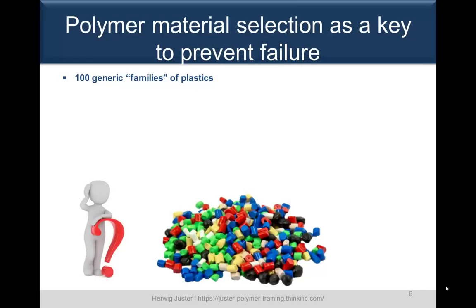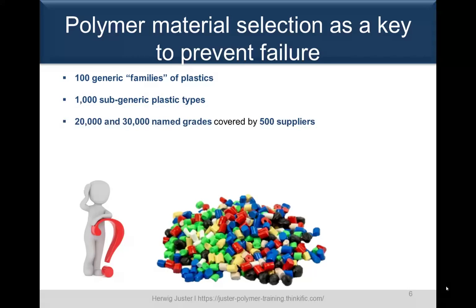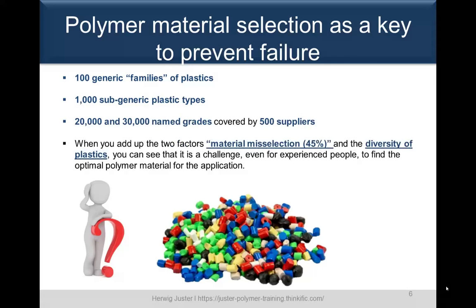We see that when we have a good polymer material selection process in place, we can use it as a key to prevent plastic part failure. We have 100 generic families of plastic resulting in over 1000 sub-generic plastic types, which sum up to 20,000 to 30,000 grades covered by over 500 suppliers. Adding these two factors — 45% material misselection and the diversity of plastics — this is a challenge even for experienced people to find the optimal polymer material for a given application.